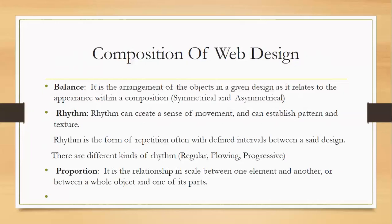Next is rhythm. Rhythm can create a sense of movement or can establish pattern and texture. It is a form of repetition, often with defined intervals between design elements. It is of different kinds: regular, flowing, or progressive. Regular means equal intervals; flowing means irregular or different intervals; and progressive is a combination of regular and flowing.